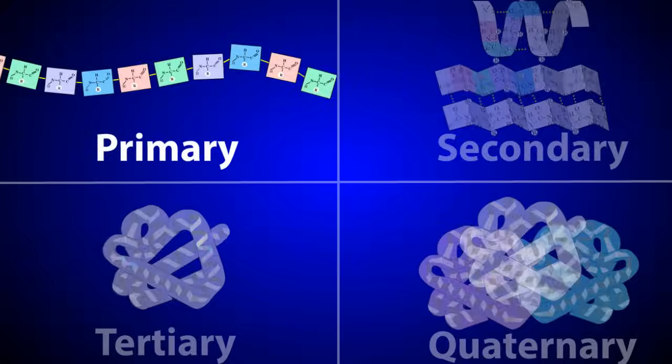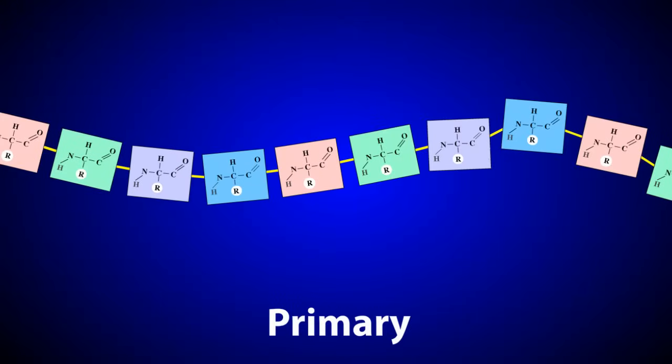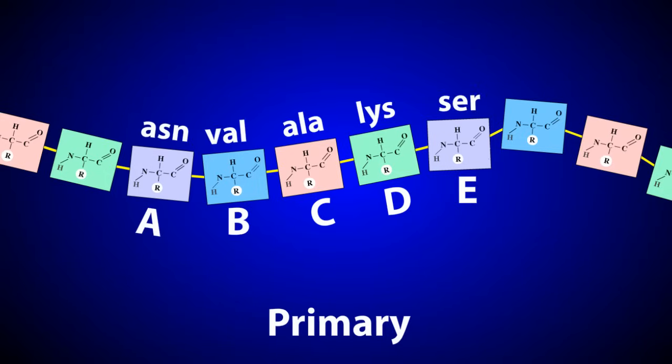The primary structure is the order of amino acids in the polypeptide chain. Amino acids can be likened to letters in the alphabet. Just as thousands of words can be constructed by varying the 26 letters in our alphabet, so too can different proteins be created by varying the number and sequence of just 20 amino acids.